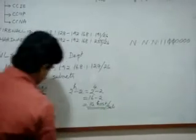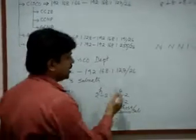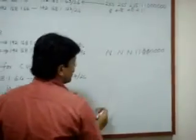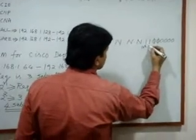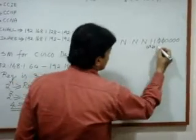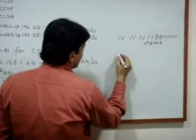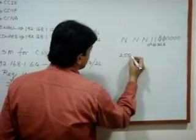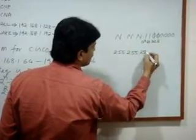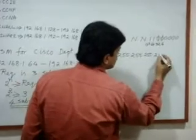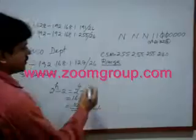Now we find the customized subnet mask. The bit values are: 128, 64, 32, 16, 8, 4, 2, 1. For all ones, we write 255.255.255, and for the last octet we add 128 + 64 + 32 + 16 = 240. So the customized subnet mask is 255.255.255.240.